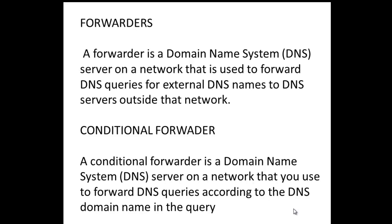You configure the conditional forwarder in the DNS console by right-clicking on Conditional Forwarder and typing the name of the domain you want queries forwarded from. With an ordinary forwarder, you don't specify a domain name — any domain can be forwarded. You might use a conditional forwarder in an enterprise with multiple domains, such as when one company has taken over another and they still have separate domains, and you only want to forward information from a particular domain.